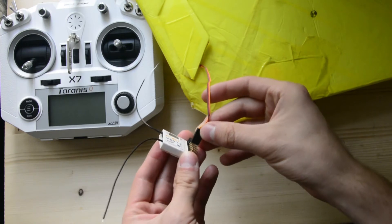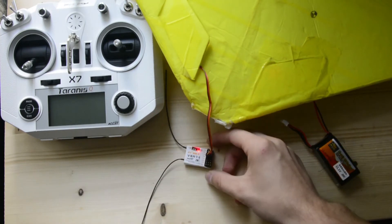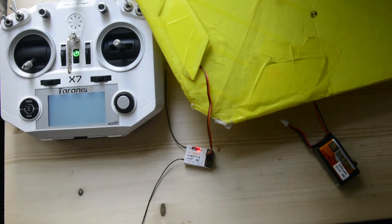Now, apply the power without pressing the FS button. The solid red light indicates that it's ready for binding.